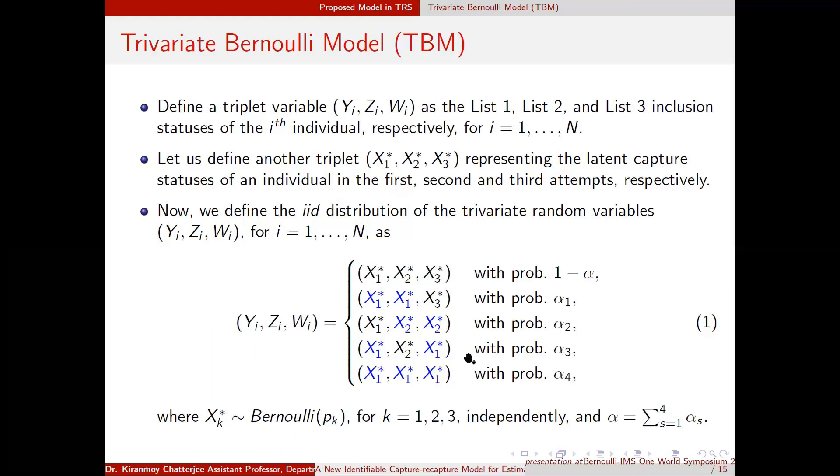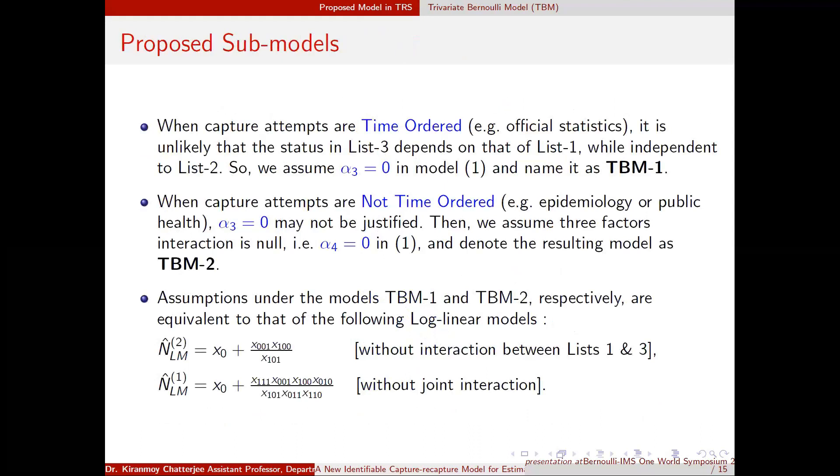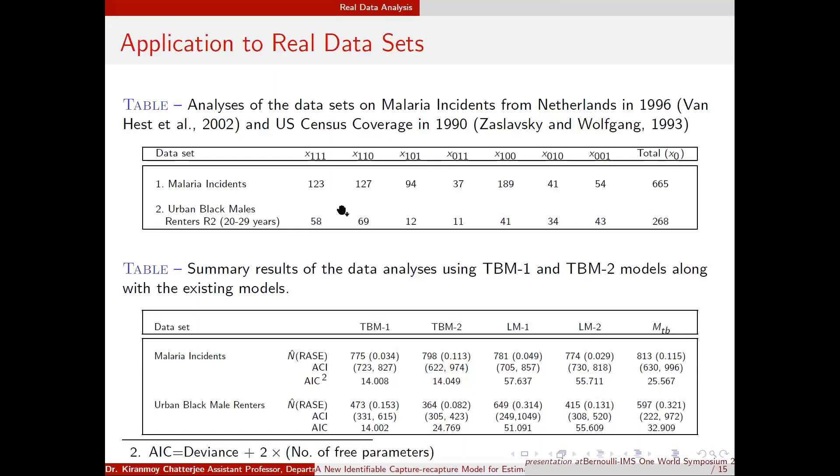Using this to estimate the model, we have assumed alpha 3 equals to 0, and in another situation when the sources are not time ordered we have assumed alpha 4 equals to 0. So there are two situations. And we have fitted this data to two real data sets.